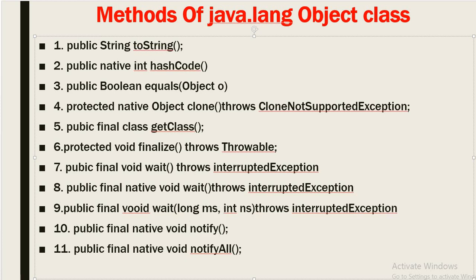In the next session we will discuss how and when we need to use these methods. We will also discuss what the difference and contract is between the toString() method and the hashCode() method, and how we can override the equals() method.